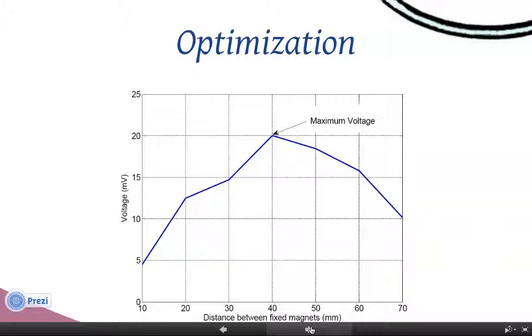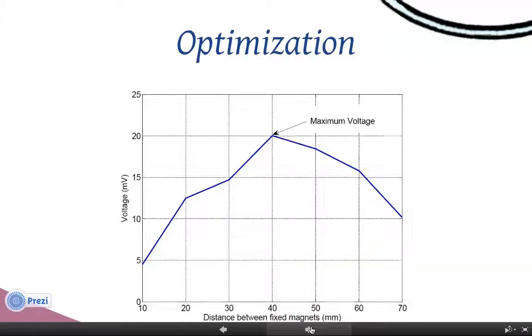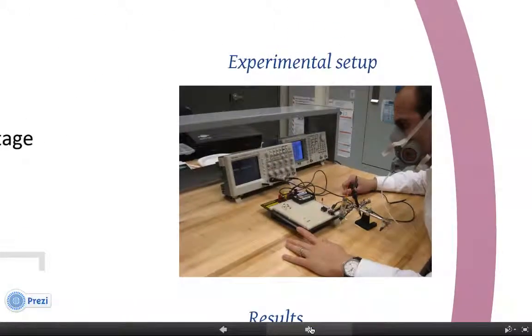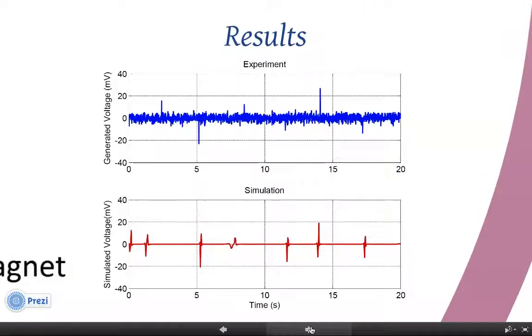Considering this value, we have made the prototype of the system and we tested it in the Creo-SIUS laboratory. And here you can see the results. Above, the blue curve is the experimental results, and below you can see the simulation results. It can be observed that there is a good agreement between the simulation and experimental results.